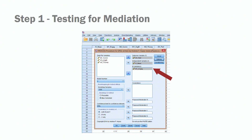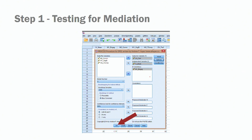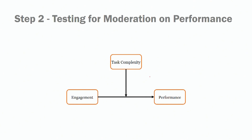Enter your variables: job performance as your dependent variable, meaningfulness as your independent variable, and engagement as your mediator. Go to Options and ask for the total effect model, then click OK. I'm not showing the output for the mediation model here since I've already done that in a different session — please go back to the mediation session if you have questions on how to interpret the output.